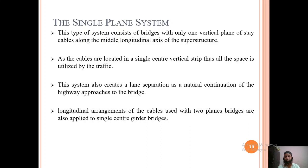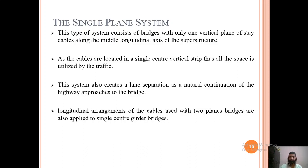In the single plane system, the bridge has only one vertical plane of stay cables along the middle longitudinal axis of the superstructure. Since cables are in a single center vertical strip, all remaining deck space is available for traffic. This system also creates a natural lane separation as a continuation of the highway approach, eliminating the need for additional lane separators.